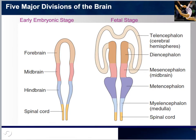The brain's early development helps us understand why the brain is composed of five divisions. When we were embryos — two to eight weeks in the mother's womb — our brain was made up of three main lumps. These would eventually become the forebrain, midbrain, and hindbrain, which would be divided into two major sections. Below that would be the spinal cord.